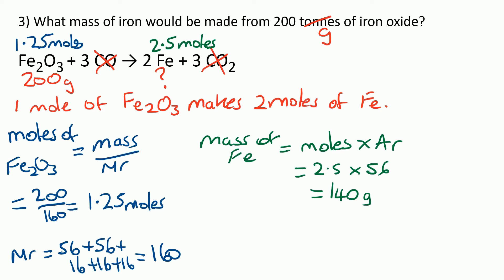At this stage we need to remember the question was in tons, so we change it back. Notice that whenever we use MR in the equation — moles is mass over MR — it's only ever for one molecule. So at that stage we ignore the balancing numbers. Similarly, where we had mass of Fe is moles times AR, it was for one iron atom — we didn't then multiply by 2 again because of the big 2 in front of it. The only time we use the balancing numbers is to write the sentence about the ratios. MR and AR is only ever for one atom or one molecule. That's a common place people make mistakes.